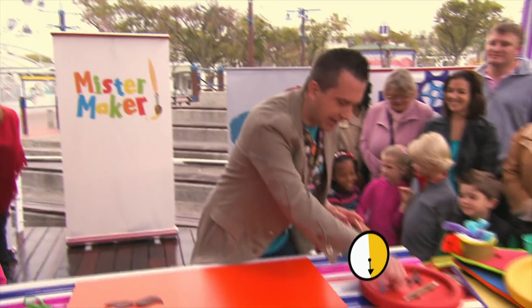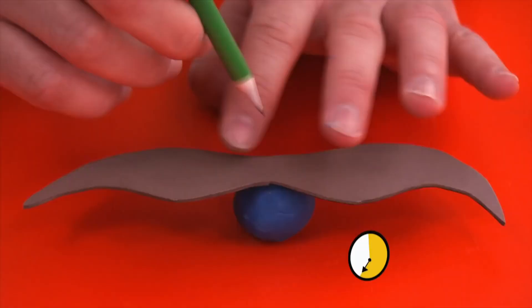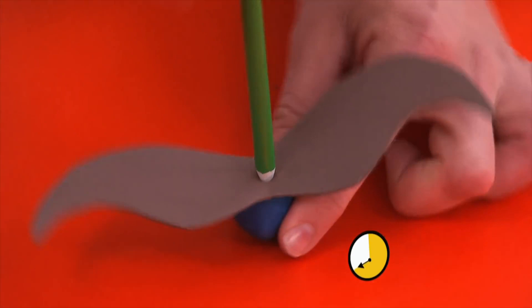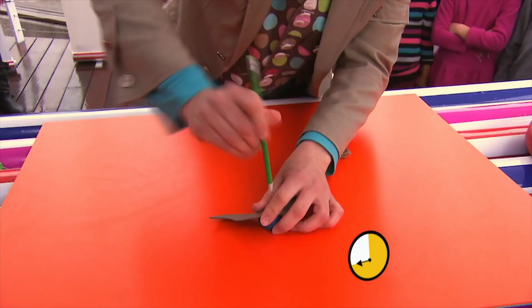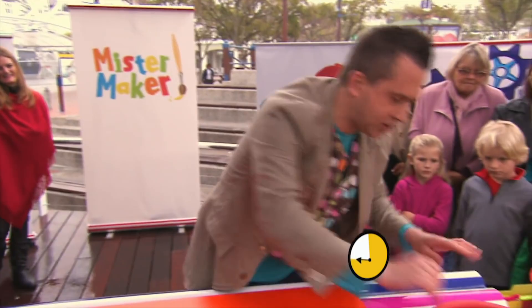Right, now we need to get our modeling clay and we're going to put that on the table, and then we're going to take our pencil. Now very carefully, we push through the foam into the modeling clay. That makes a hole like that, and then we can use that hole to push in our drinking straw.